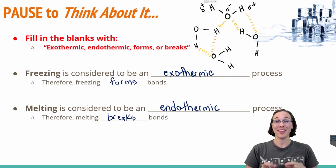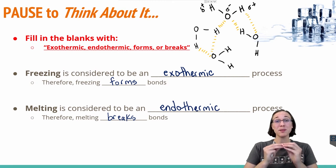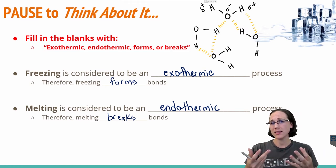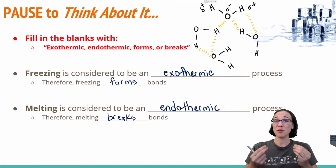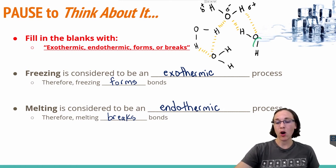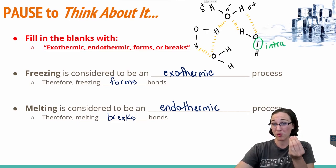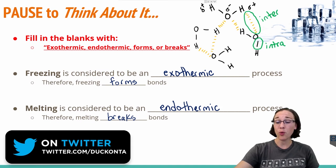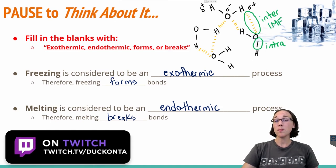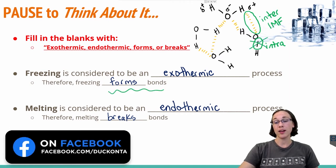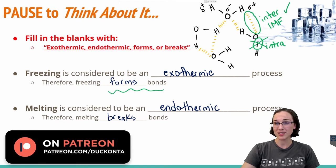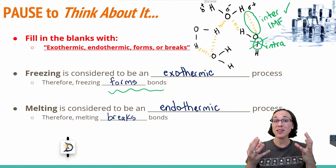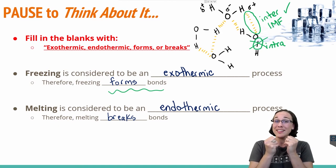Freezing is exothermic — it releases heat. Therefore we can say that freezing forms bonds. To clarify: when I say it forms bonds I'm implying intermolecular bonds, not intramolecular bonds. The O and H are connected via intramolecular bonds holding the water molecule together, whereas the bond between oxygen and hydrogen on two separate water molecules is an intermolecular force, or IMF. For water to freeze, it has to form stronger, closer-together hydrogen bonds with itself to hold itself together.